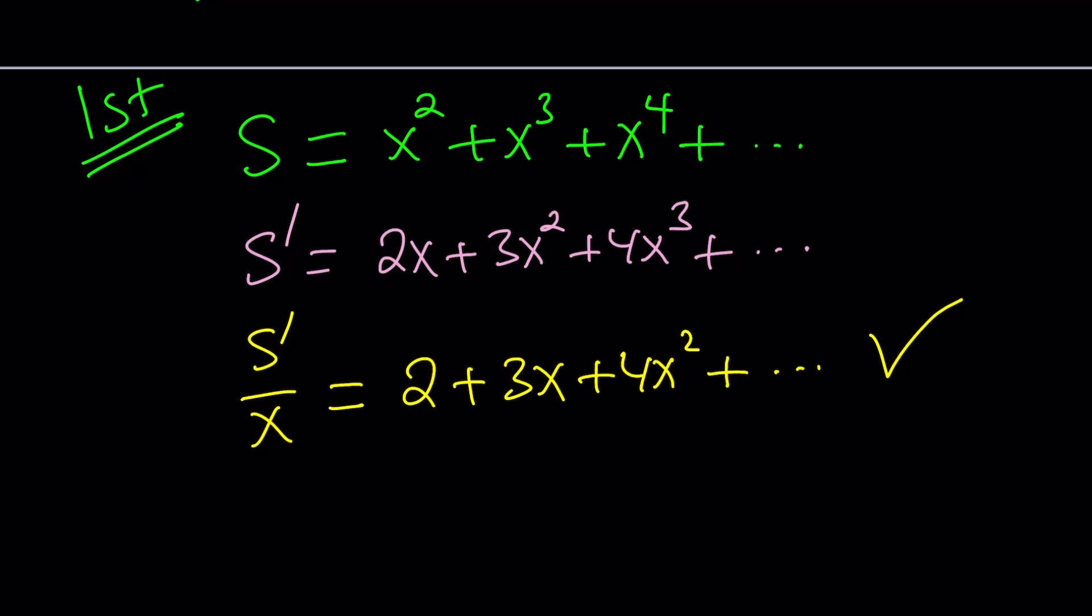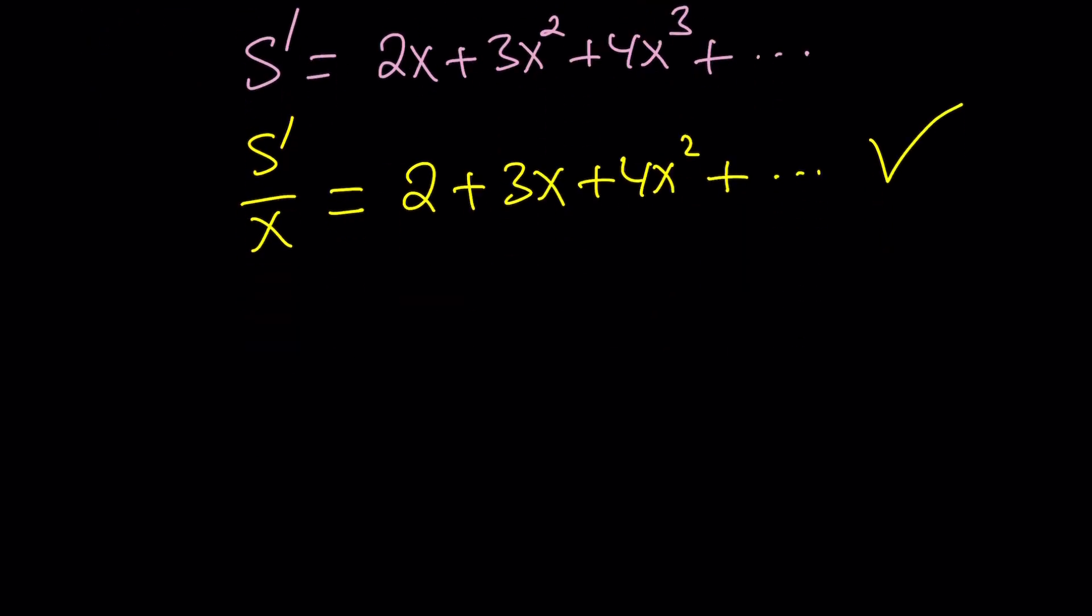I hope you do because we're about to divide both sides by x. That's why probably x should not be 0. But if you divide both sides by x, provided that x is not 0, we get 2 plus 3x plus 4x squared plus 5x cubed, so on and so forth. And this is actually the sum we are looking for. This means if we take S and differentiate it and divide it by x, we'll get the sum we are looking for.